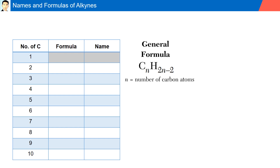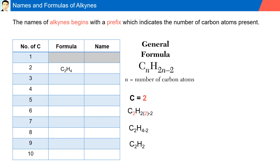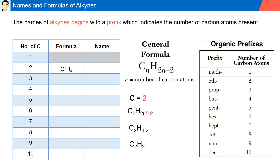Names and formulas of alkynes. Alkynes have the general formula CnH(2n-2), where n is the number of carbon atoms. Again, we cannot have an alkyne with just one carbon, since there must be a triple bond present. For an alkyne with two carbon atoms, plugging into the general formula CnH(2n-2), we solve and get C2H2. For the naming, alkyne names begin with a prefix indicating the number of carbon atoms, similar to alkenes and alkanes. Since there are two carbon atoms, the name starts with eth, and the ending is -yne: ethyne.